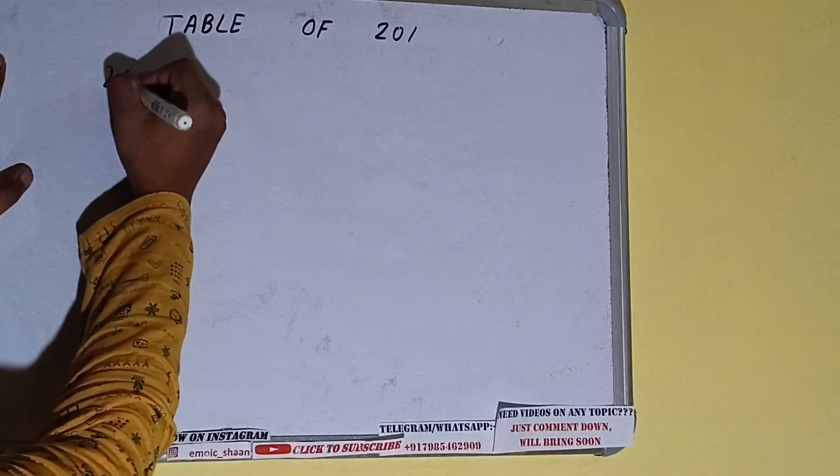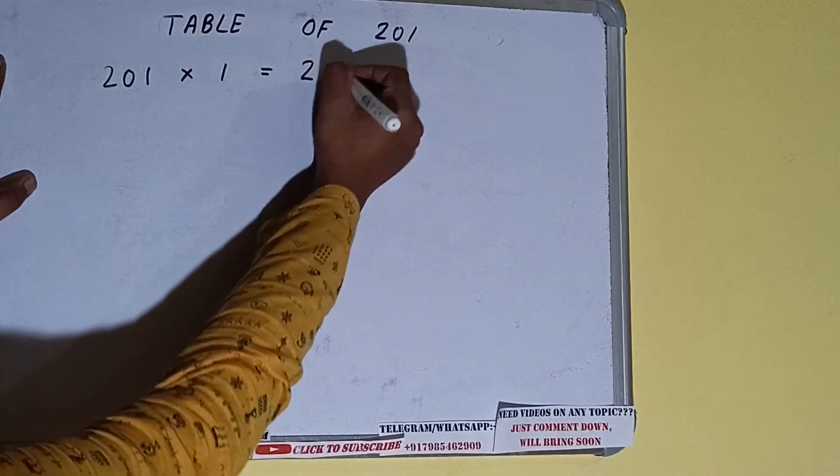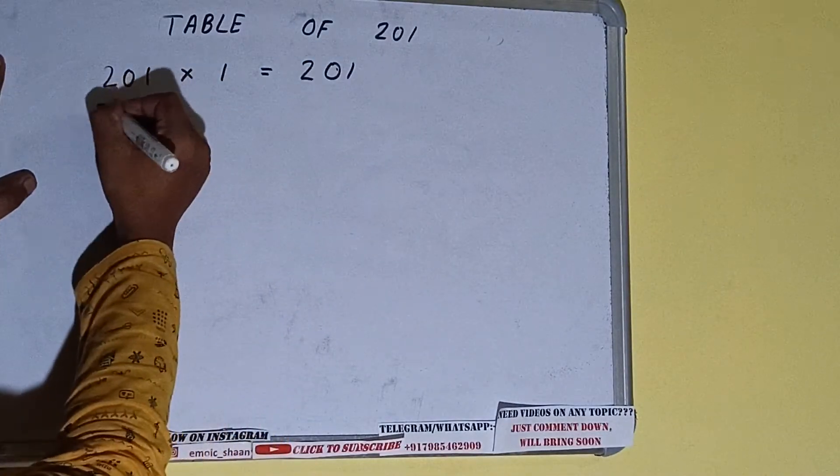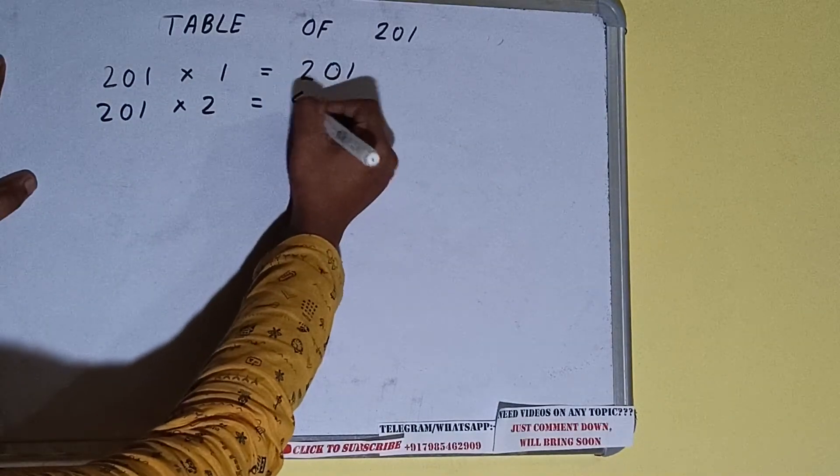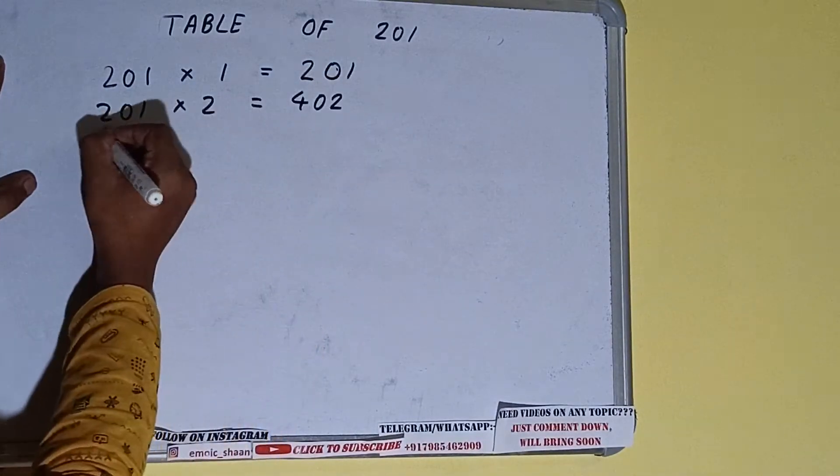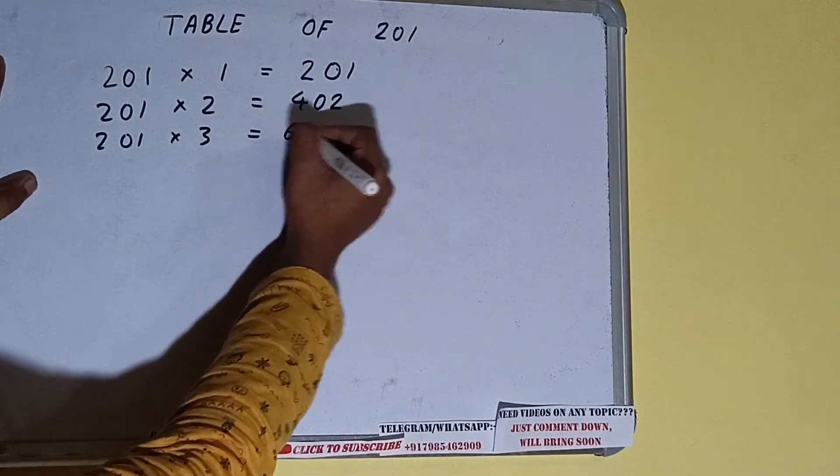So 201 into 1 times is the number itself, that is 201. 201 into 2 times is 402. 201 into 3 times is 603.